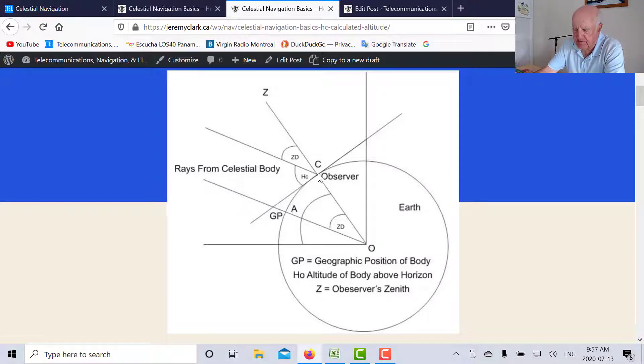So if we know ZD then we know this ZD, and therefore 90 degrees, because this is the right angle here, we know that 90 degrees minus ZD is HC. So all we have to do is determine this great circle distance AC.